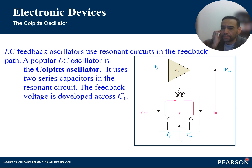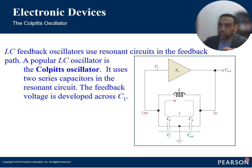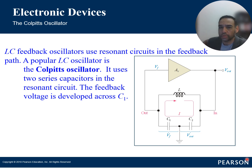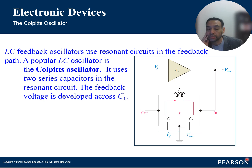Colpitts oscillators are used in RF applications such as wireless communication, radio transmitters, local oscillators in receivers, and signal generators. They're also used in frequency synthesizers, test equipment, and scientific instruments. Overall, the Colpitts oscillator is a popular choice — very simple to design, easy to calculate, and has a wide variety of applications.